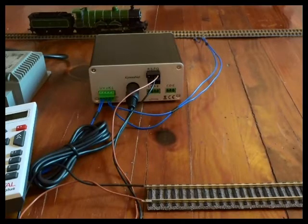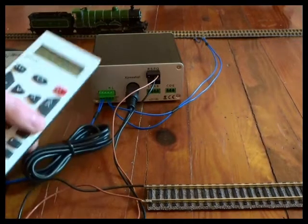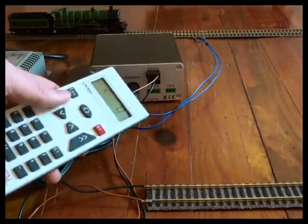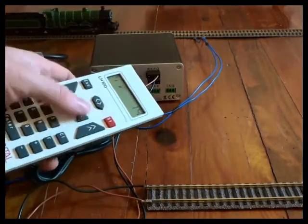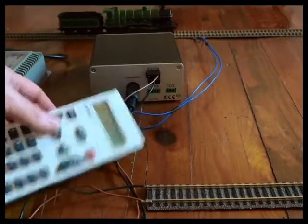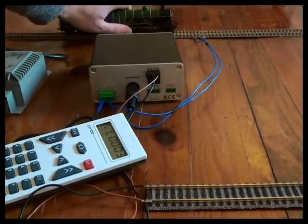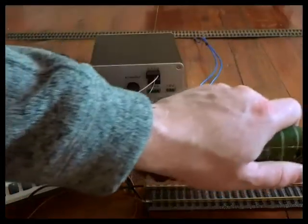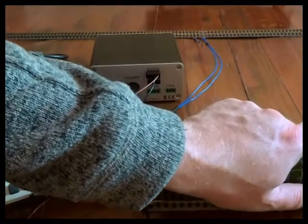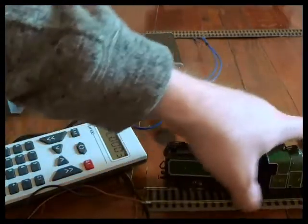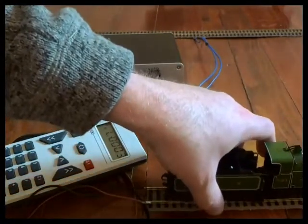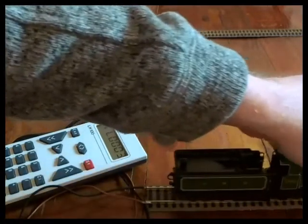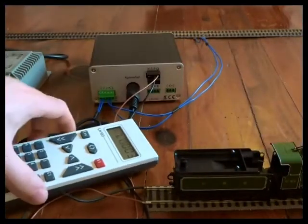It's a nice way of checking it out and making sure you've got no shorts or any problems with the installation. Even on new locos, it's still quite nice to use a programming track. The main track out here is just powered up. We've moved the loco across to my programming track and made sure it's got reasonable contact with the rails.